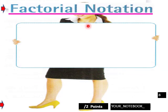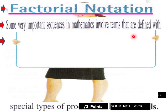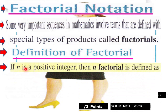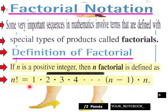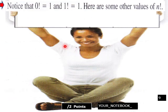Slide number eight: factorial notation. Some very important sequences in mathematics involve terms defined with special types of products called factorials. The definition: if n is a positive integer, then n factorial is defined as n! = 1 × 2 × 3 × 4 × ⋯ × (n−1) × n. As a special case, zero factorial is defined as 0! = 1.